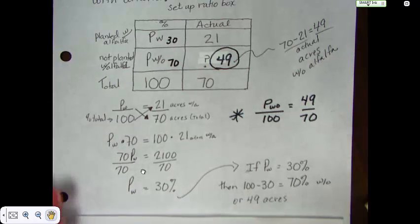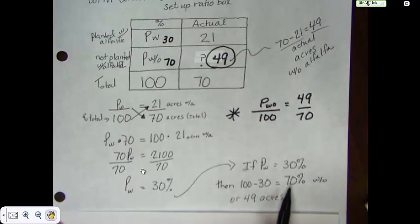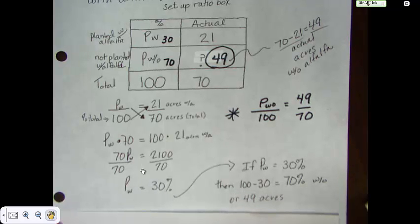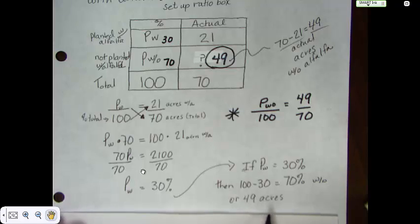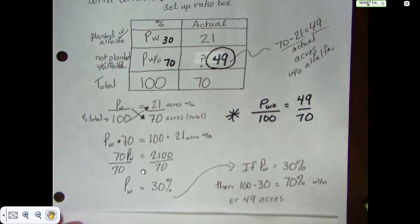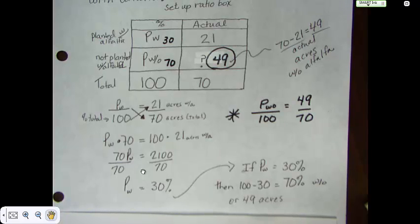Okay, so if I take 2100 divided by 70, I get 30%. If I take 100 minus 30, I get 70%. 70% is not planted with alfalfa and that is 49 acres as well. Okay, hopefully this wasn't too confusing on a day when everybody's trying to get back into things. Have a great day and I will talk to you later.